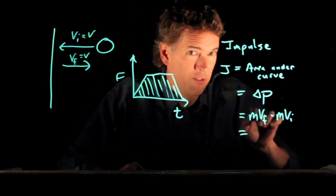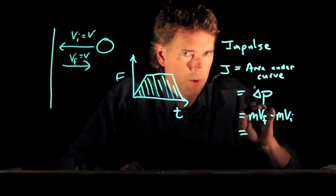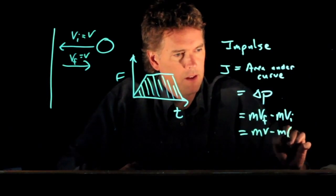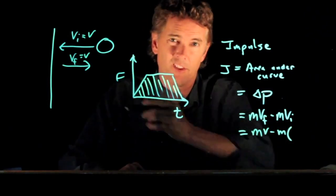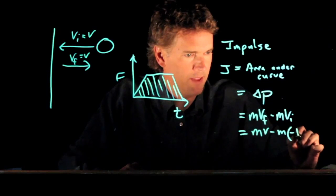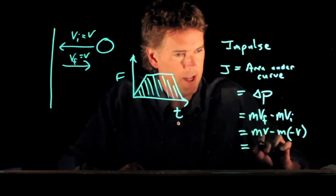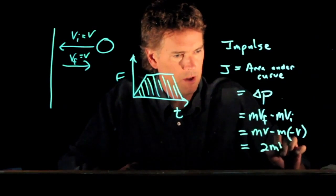If I made both of those Vs, this whole thing would go to zero. We know that can't be right. But what we do know is that V_initial is to the left, and we're going to say that's a negative. And so look what happens. We end up with a negative negative. We end up with 2mV.